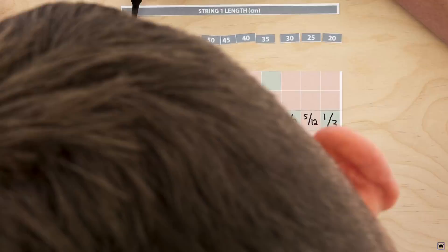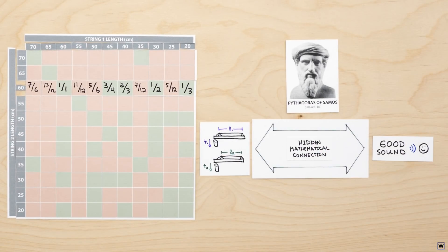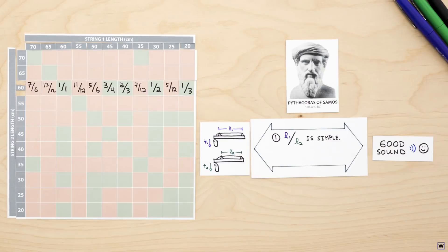This was the first discovery of Pythagoras. Strings sound good together when the ratio of their lengths is simple.